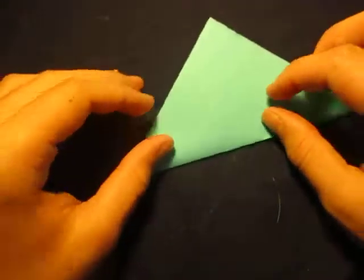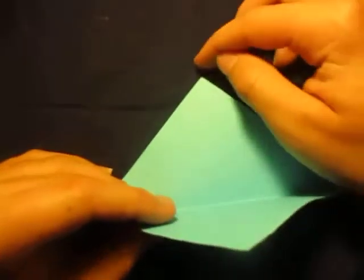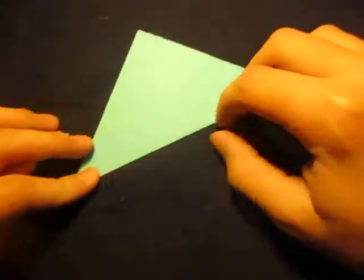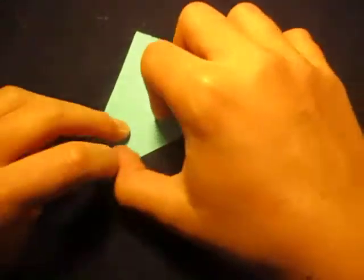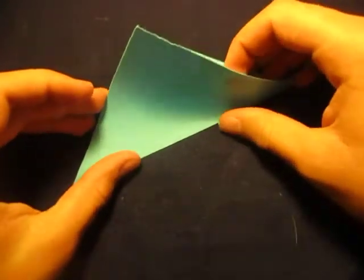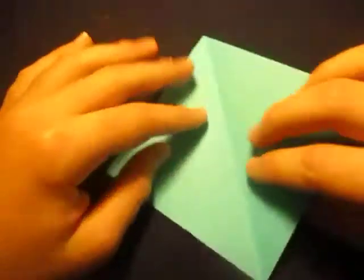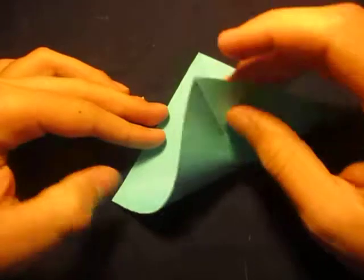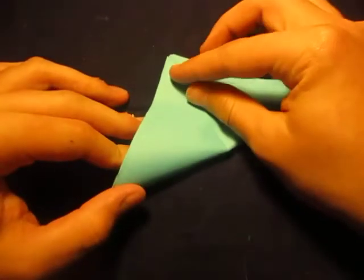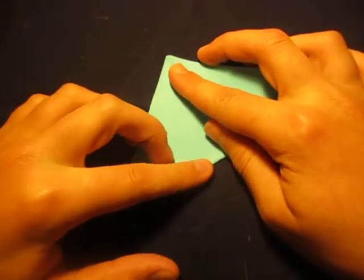So we're going to run a fold diagonally in half. We're going to bring this point to this point right here. Crease sharply and make exact folds and unfold. And now fold in half the other way, so we're taking this point to this point now. Just like this.